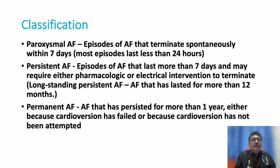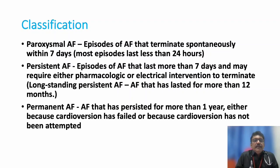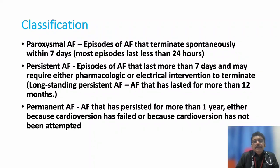Classifying atrial fibrillation: paroxysmal AF means episodes terminate spontaneously within seven days — most are transient, lasting one hour or less than 24 hours. Persistent AF means it persists more than seven days. Permanent AF means it persists more than one year. So paroxysmal means it comes acutely and disappears fast.